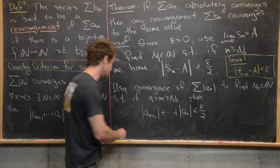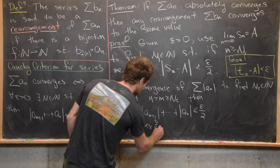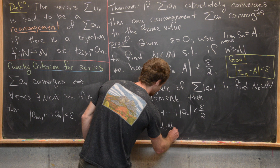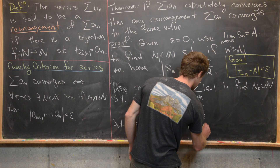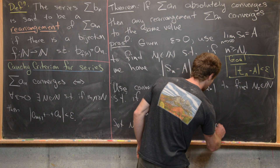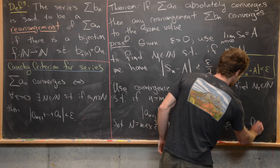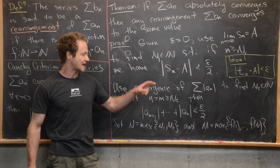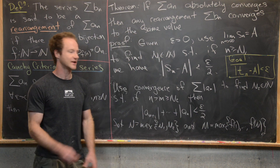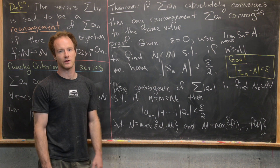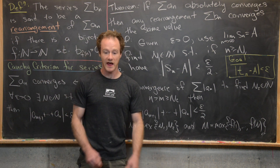Now we set capital N equal to the maximum of little N, N sub 1, and N sub 2. We also set capital M equal to the maximum of F(1), F(2), all the way up to F(N). This ensures that we are far enough out into our rearranged series that everything works out correctly.